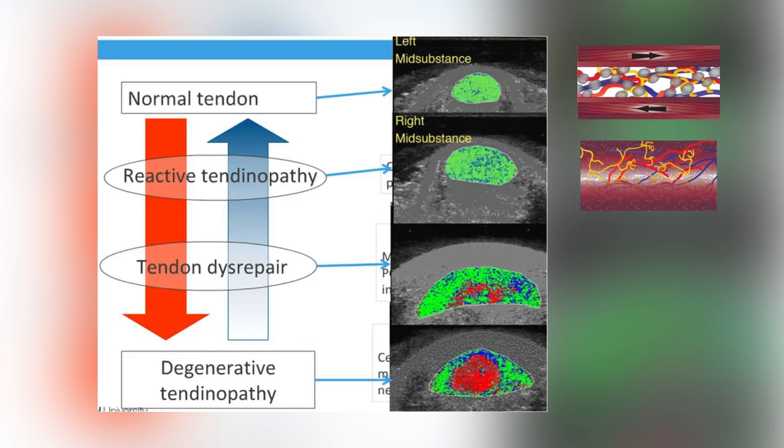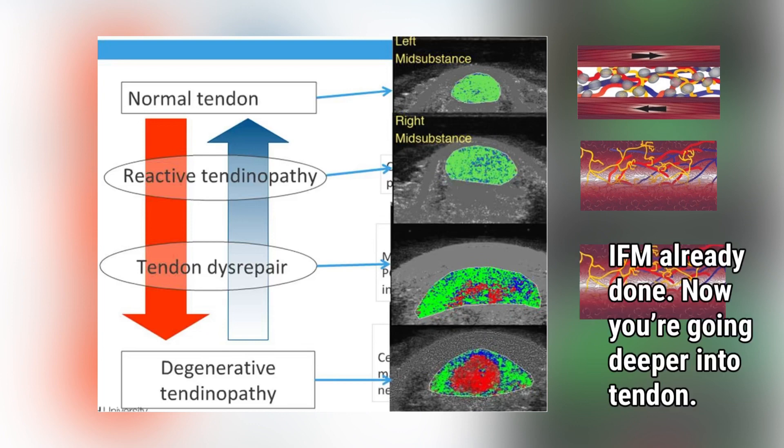If you continue to overload the reactive tendon, now you're potentially tapping into the fascicular collagen, and you are making a degenerative tendon.